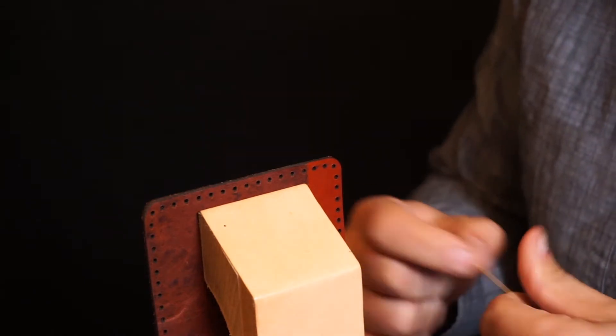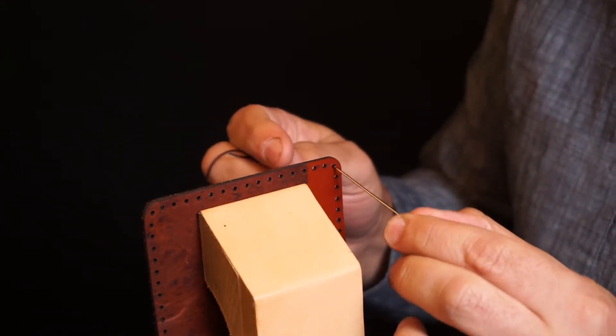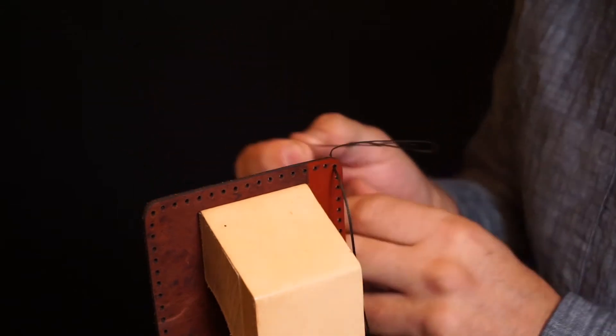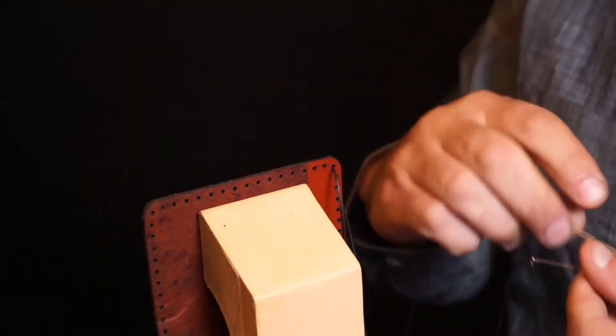Now to begin our stitching, we're going to pass one needle through the first hole in the corner, and then even out our threads, so we have the same amount of thread on each side.